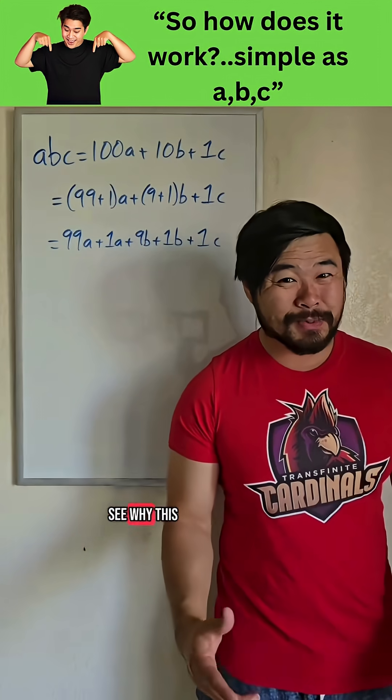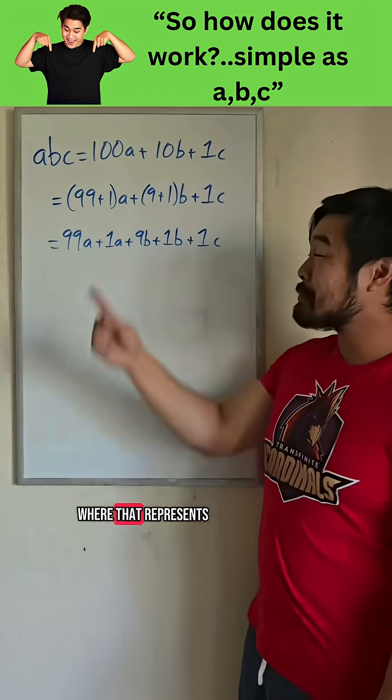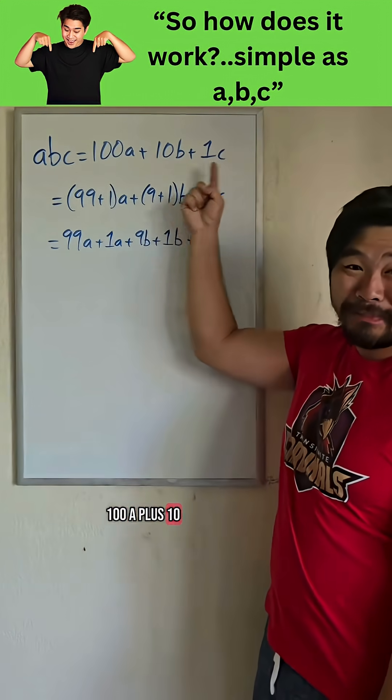Let's see why this works. We can see why this works with the general form of a three-digit number ABC, where that represents 100A plus 10B plus 1C.